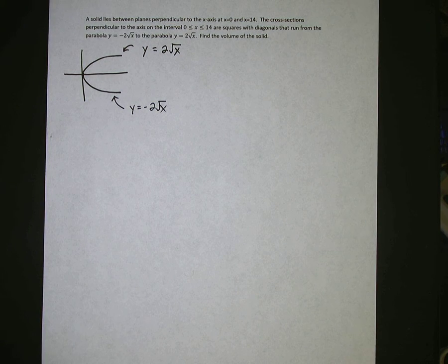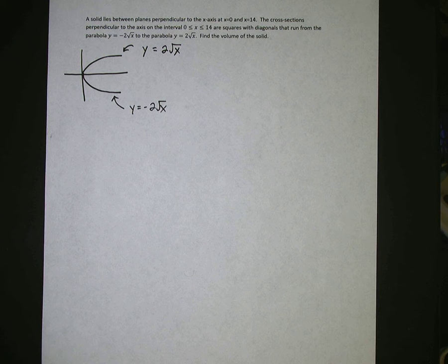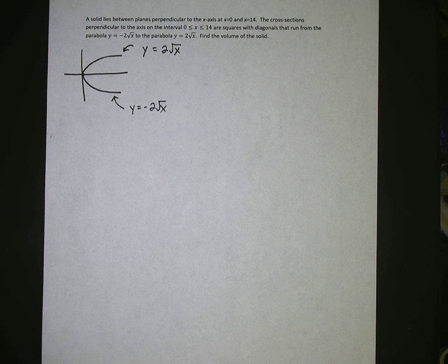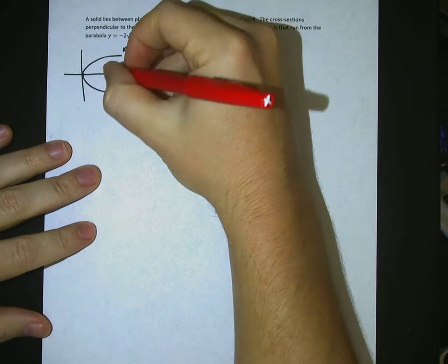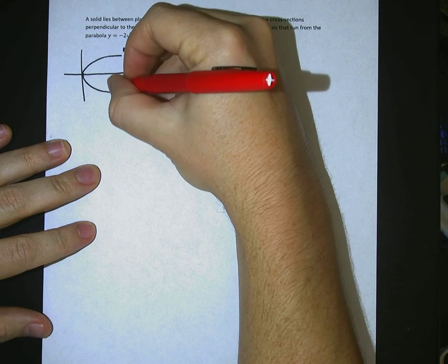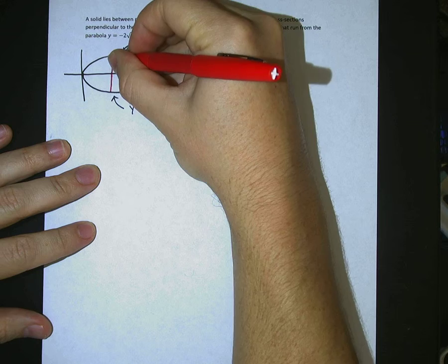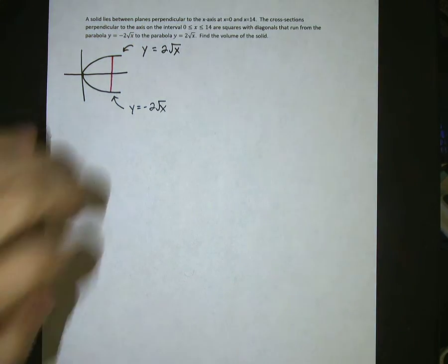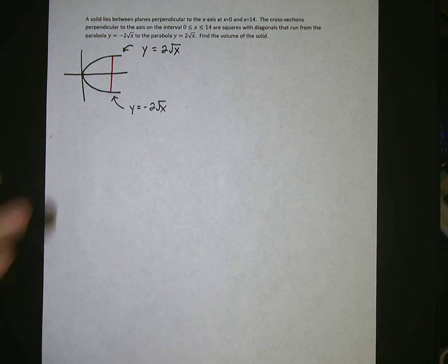Okay, so first thing I want to do is figure out how long this segment is that goes from one to the other. This segment that would be here, this would be the diagonal of the square that they're talking about there. So we need to figure out that length.